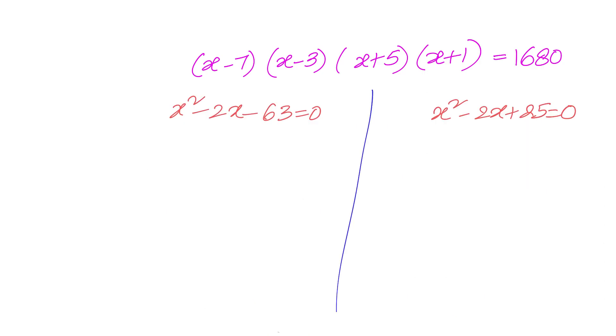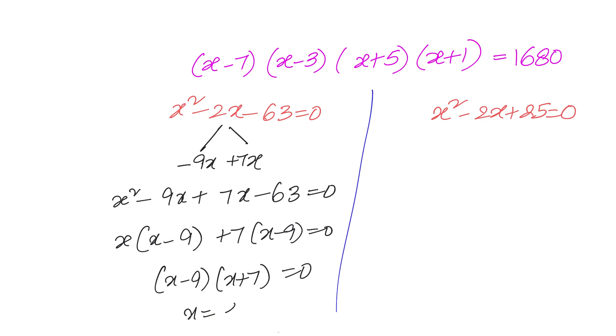x square minus 2x minus 63 equals to 0. We can split the middle term. We can write down minus 2 as minus 9x and plus 7x. So that we can factorize it. We will write down x square minus 9x plus 7x minus 63 equals to 0. We can take x common, x into x minus 9 plus 7 into x minus 9 equals to 0, or we have x minus 9 into x plus 7 equals to 0, which will give us x equals to 9 or x equals to minus 7.